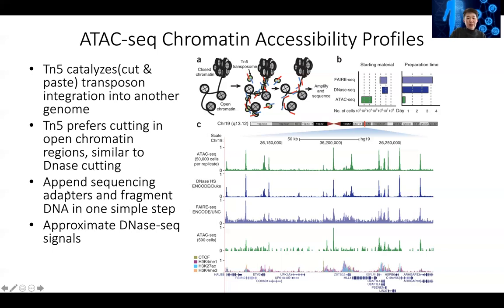The nice thing is that instead of using the transposome, scientists discovered we can give Tn5 DNA sequencing adapters. If you hybridize Tn5 with the DNA sequencing adapter, it will cut and insert the sequencing adapter into the genome, and after that all you need to do is PCR amplify.